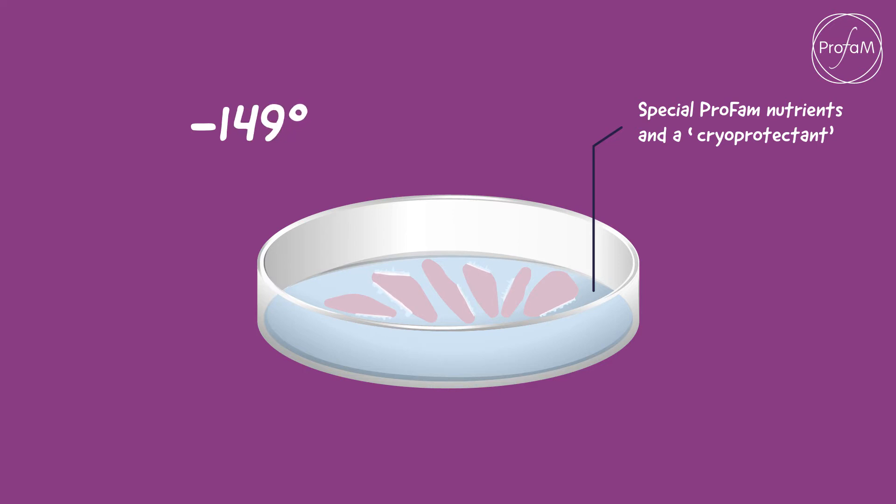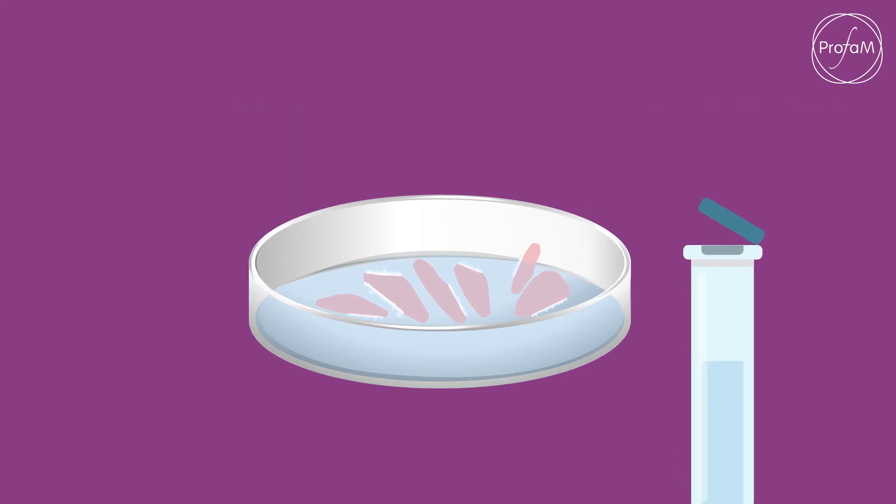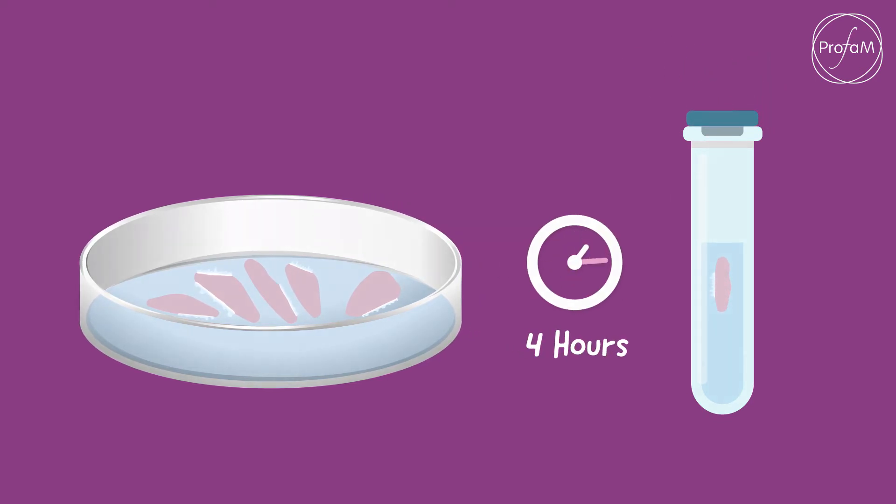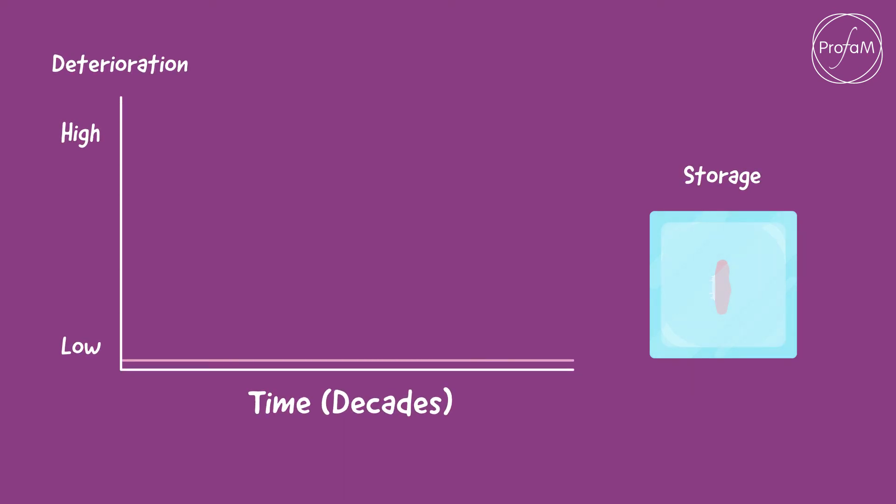as the tiny pieces of tissue, the eventual grafts, are slowly taken down in temperature to minus 150 degrees centigrade and stored. This process takes four hours. The tissue can then be preserved in storage for many decades without deteriorating.